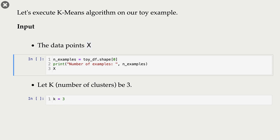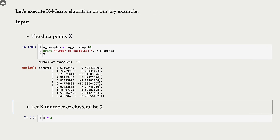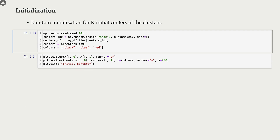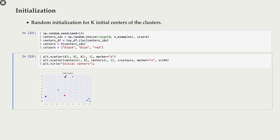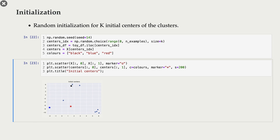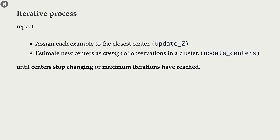Let's execute this K-means algorithm on our toy example. Here is our data, and K, our number of clusters, is 3. The first step is initialization — we create K random centers for our data set. Next is the iterative process where we repeat two steps until centers stop changing: cluster assignment and updating cluster centers.